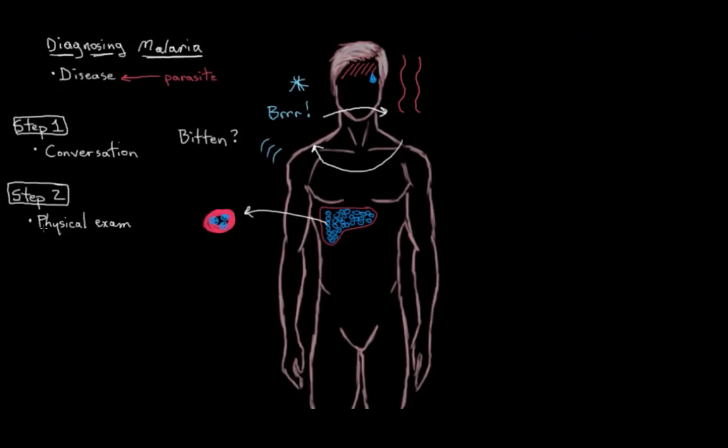So in the physical exam, we look for any clues on the outside of your body that might be able to tell us if these things are happening on the inside of your body. We know something might be going on in the liver, so we actually feel for the liver to see if it's enlarged, because all of the inflammation that would be happening if the liver cells were bursting or infected would make the liver enlarge a bit.